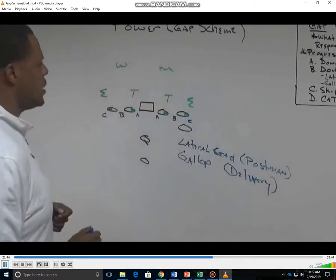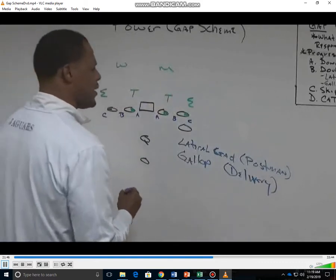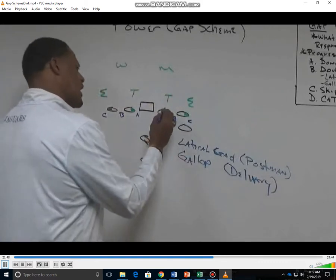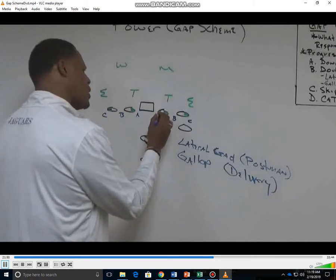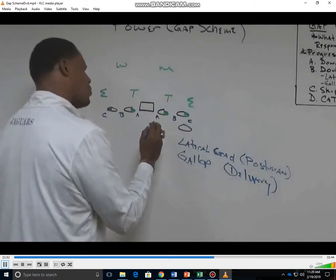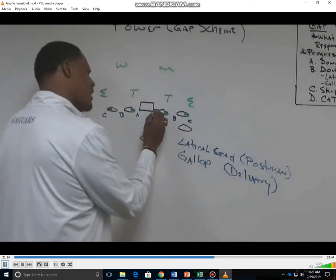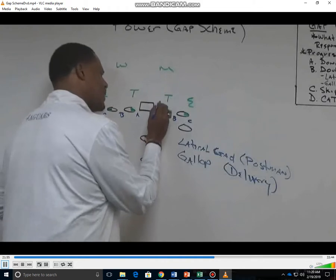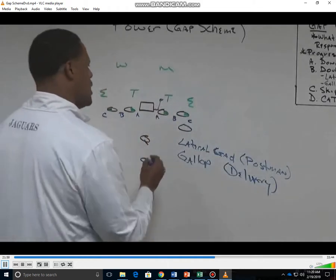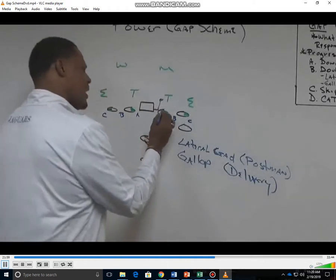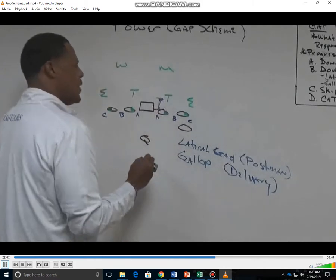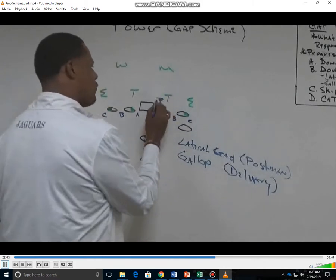When we talk about postman and delivery man, the playside guard is responsible first — he takes a lateral step first. He's going to lateral on the end gap, then lead back through the defender's crotch. He's the cover guy.